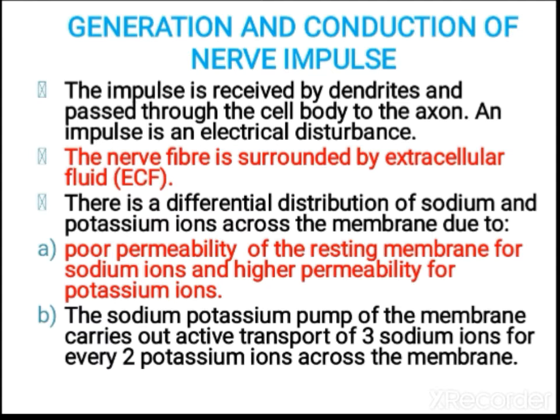The nerve fiber is surrounded by extracellular fluid, which we call ECF. There is a potential distribution of sodium and potassium ions across the membrane, due to the poor permeability of the resting membrane to sodium ions and higher permeability to potassium ions. The sodium-potassium pump carries out active transport of three sodium ions out for two potassium ions into the cell.